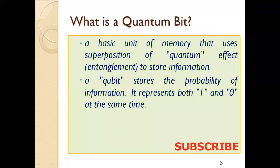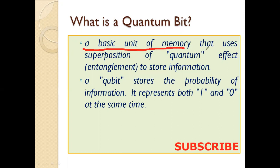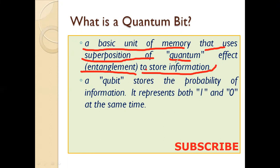So what is a quantum bit? You are already aware of what a bit is. In quantum computing, we deal with the quantum bit. A quantum bit can be defined as a basic unit of memory that uses superposition and quantum effects like entanglement to store information. Just as a bit is used to store information in traditional computing, in quantum computing we use a qubit to store quantum information.